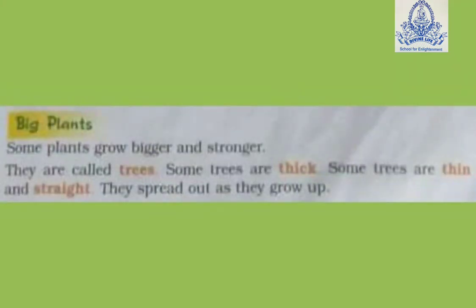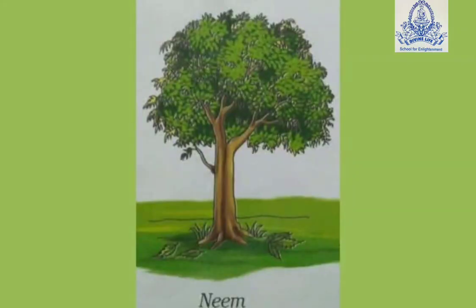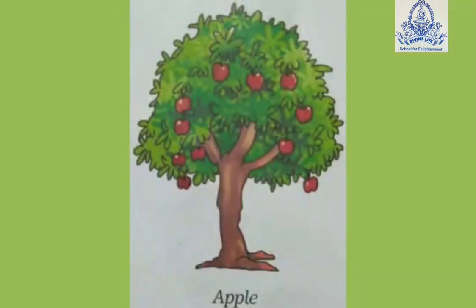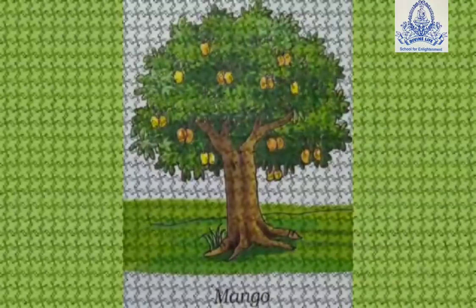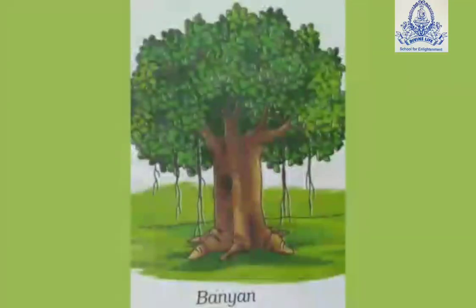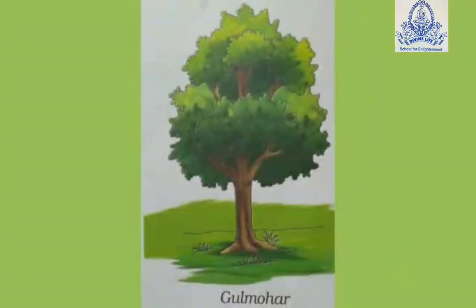Big Plants: Some plants are big and strong. They are called trees. Examples include neem trees, apple trees, mango trees, banyan trees, coconut trees, and gulmohar trees.